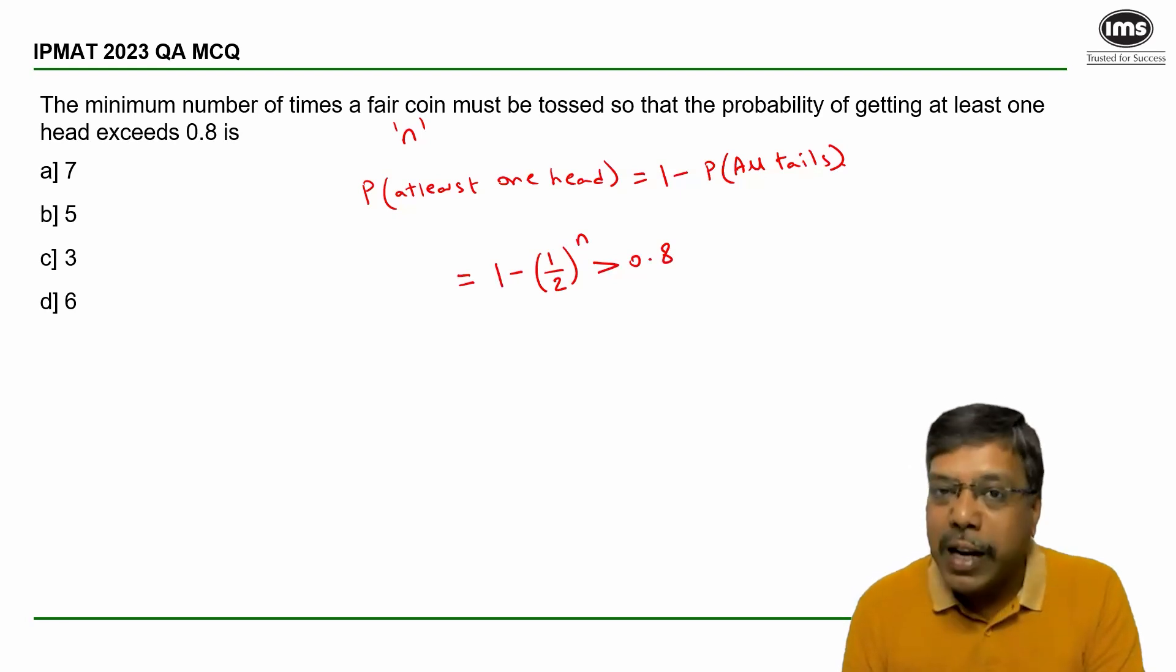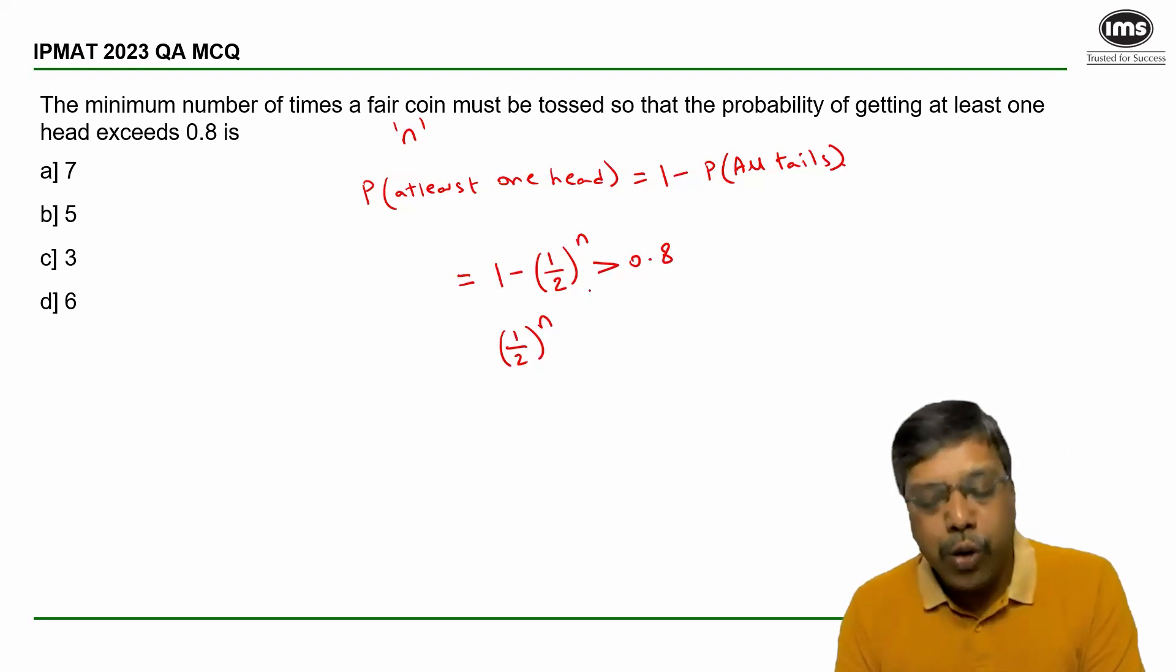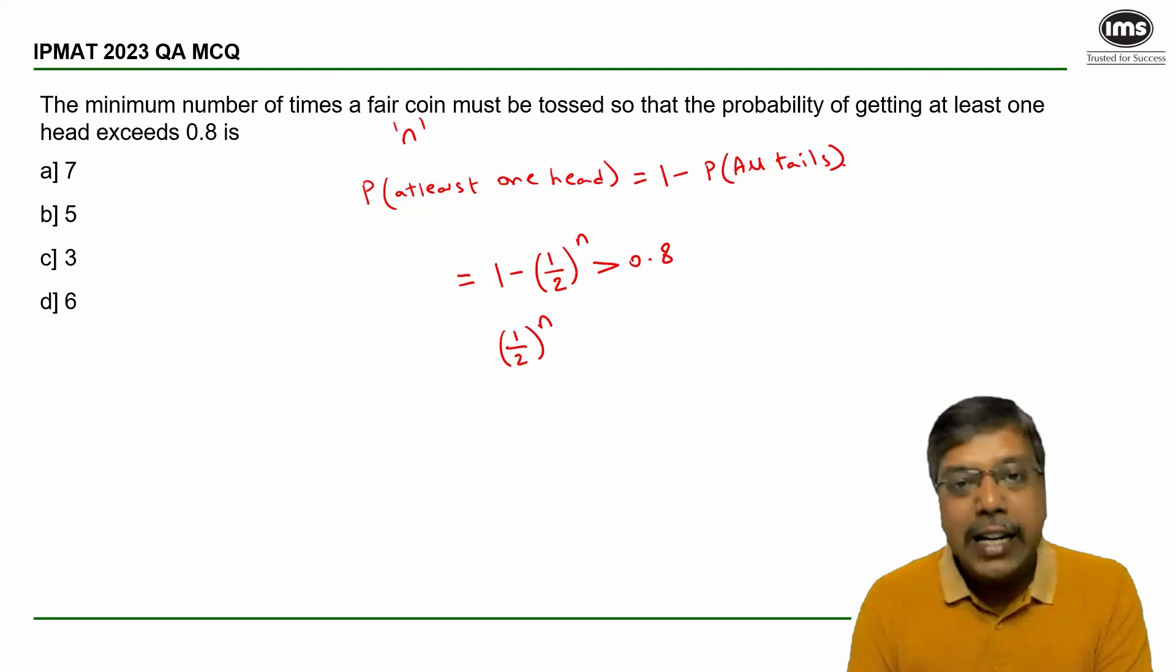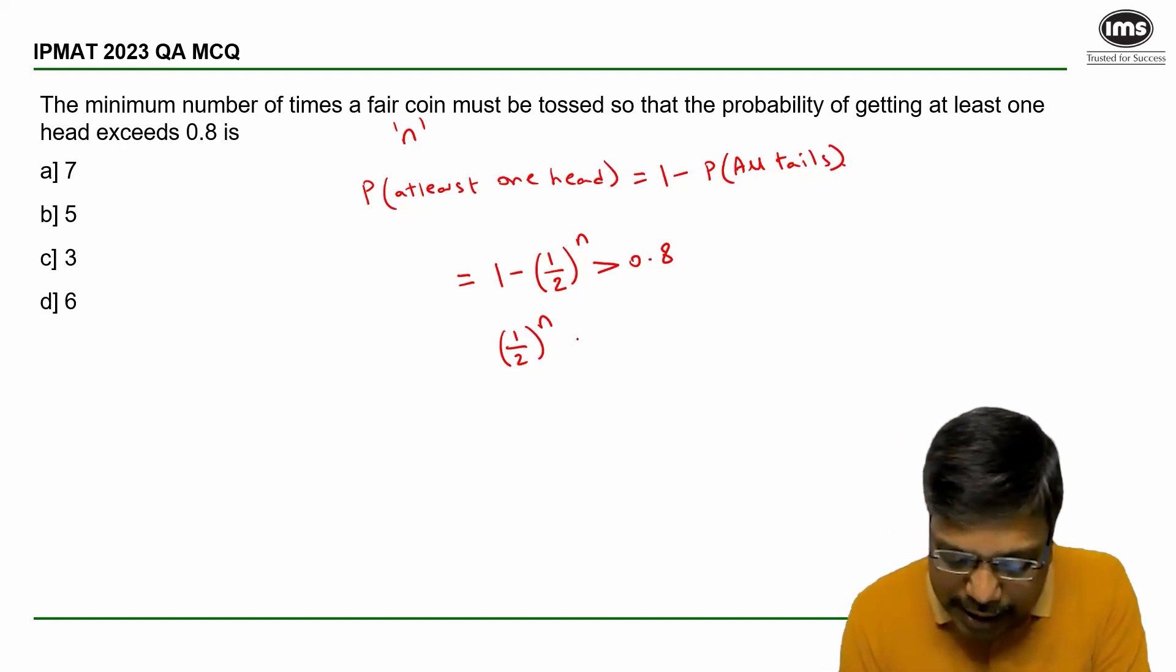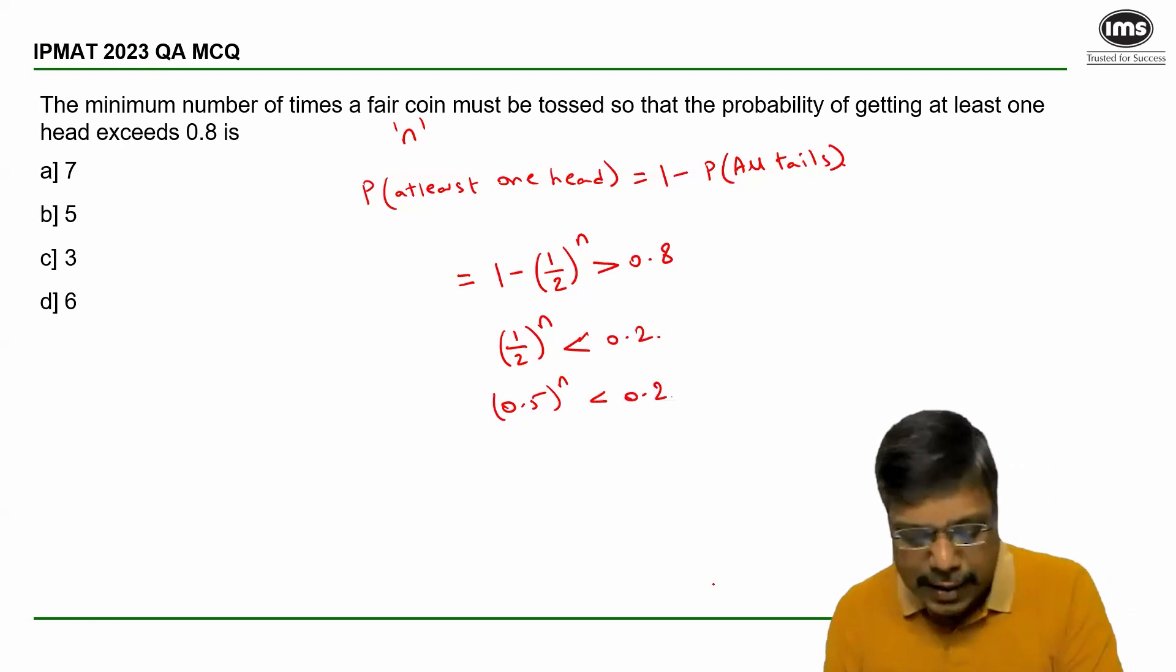I can write this as (1/2)^n. If I add (1/2)^n on both sides and subtract 0.8 on both sides, I get (1/2)^n = 1 - 0.8 = 0.2. Now 1/2 is 0.5, so 0.5^n is less than 0.2 and I need to find the minimum value of n that satisfies this.